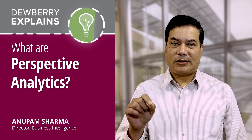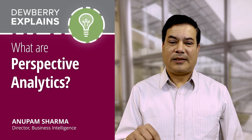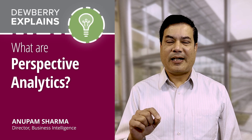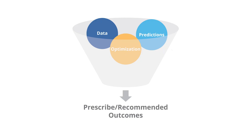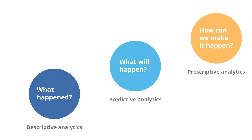When you enter an address on your GPS, it uses three types of analytics: descriptive, predictive, and prescriptive analytics to give you either the shortest path or the quickest path to your destination. Descriptive analytics is what it knows, like distance and road conditions.